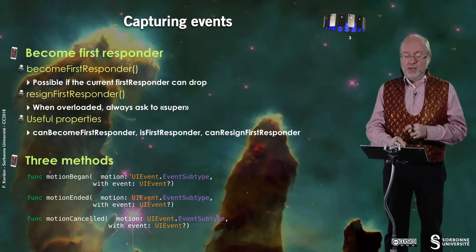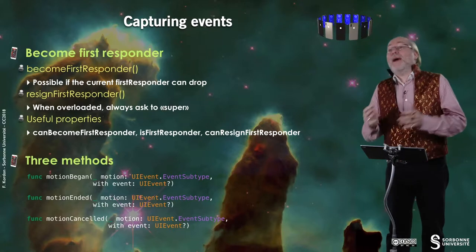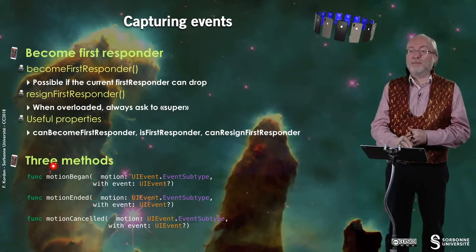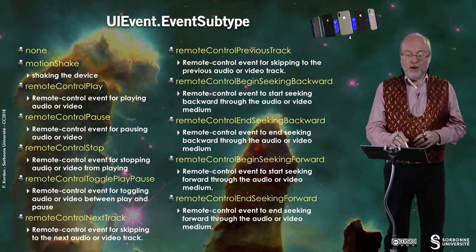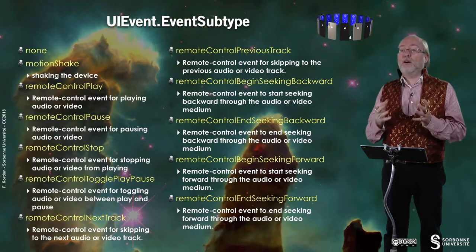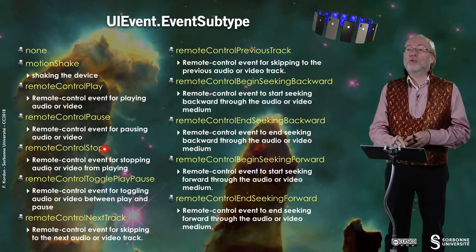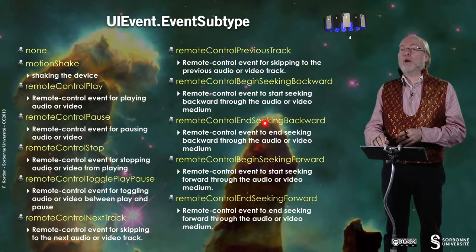When you start the motion, motionBegan is activated. When it ends, motionEnded is invoked, and if it's cancelled, motionCancelled is called. You have lots of event subtypes: none (no event), then motionShake for shaking the device, and then all the stuff related to remote control handling — control play, control pause, control stop, control toggle play, control next track, control previous track, begin seeking backward, end seeking backward, begin seeking forward, end seeking forward. You can also use this when you have, for example, a headphone with a remote control, and you can catch such events.